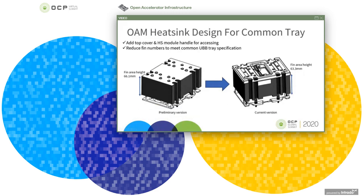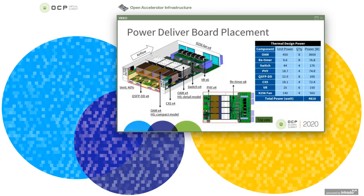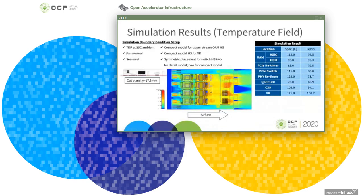For the thermal design, one key difference from the 2019 regional summit introduction is the addition of a top cover and module handle for OAM sync, which makes servicing easier. Considering the system outline constraints, the fin area was reduced from 66.1mm to 63.3mm. Thermal simulation was conducted for this change and results show temperatures are all within acceptable ranges. Real testing is currently underway in the lab and results should be ready soon.